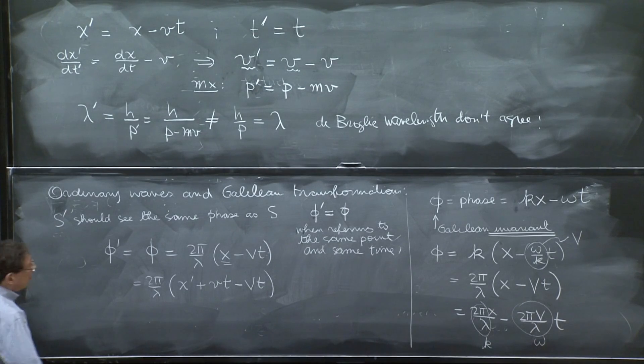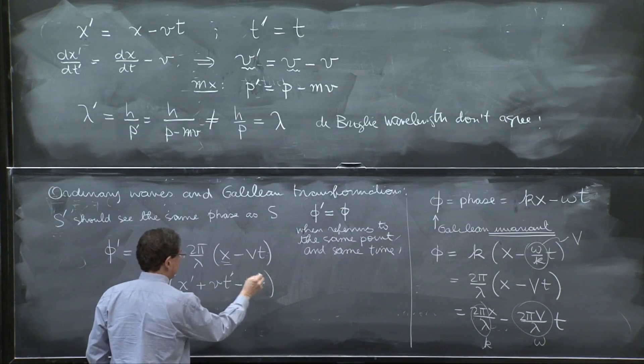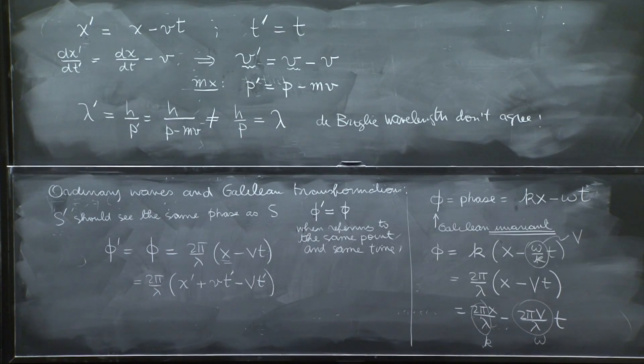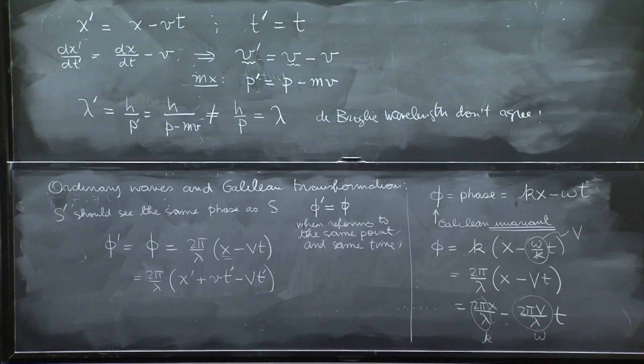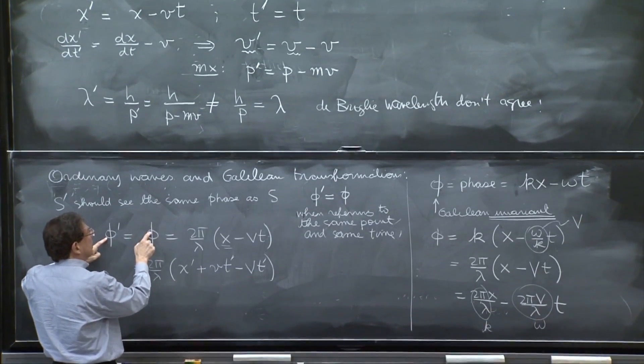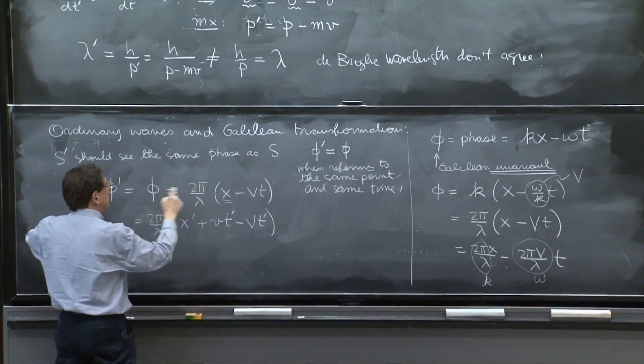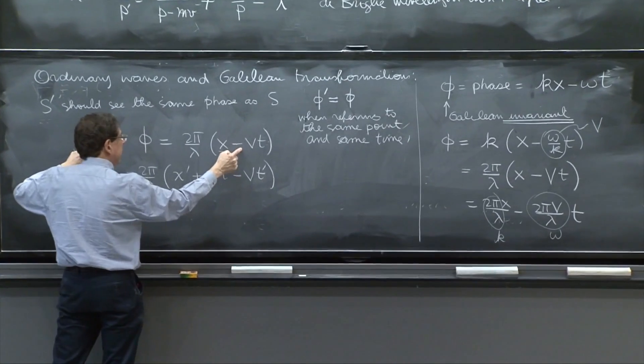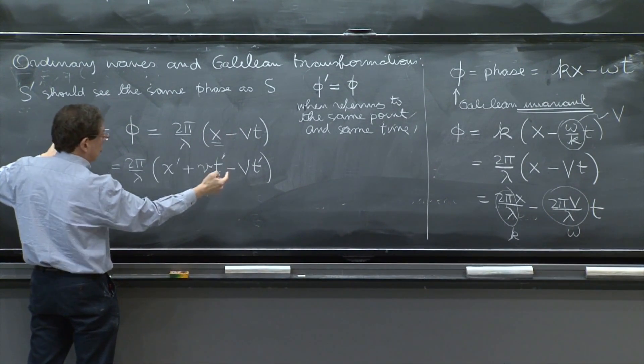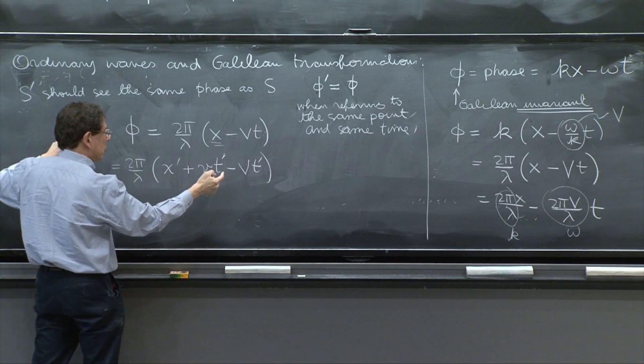And I could even do more if I wish. I could put t prime here, because t and t prime are the same. So phi prime, by the condition that these phases agree, is given by this, which is by the relation between the coordinates and times of the two frames, just this quantity.